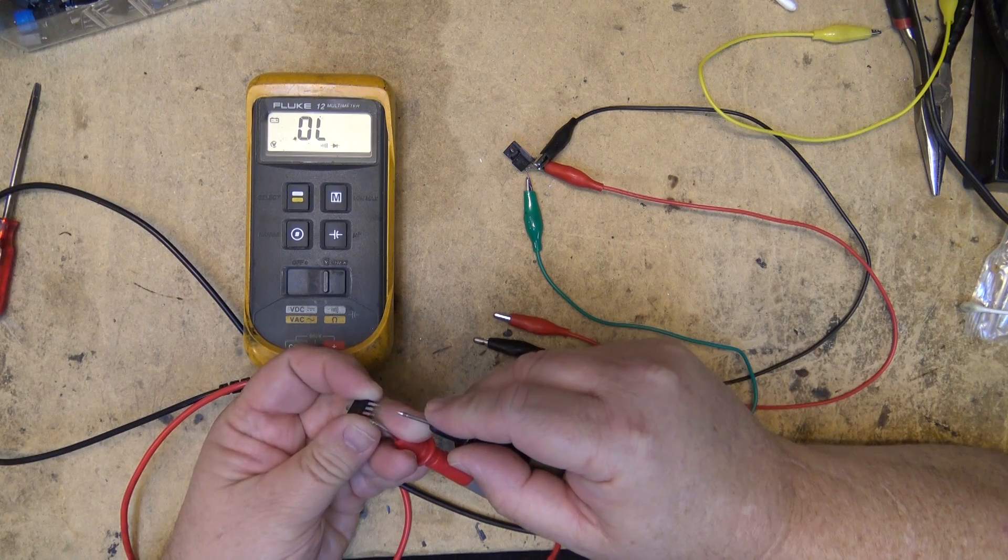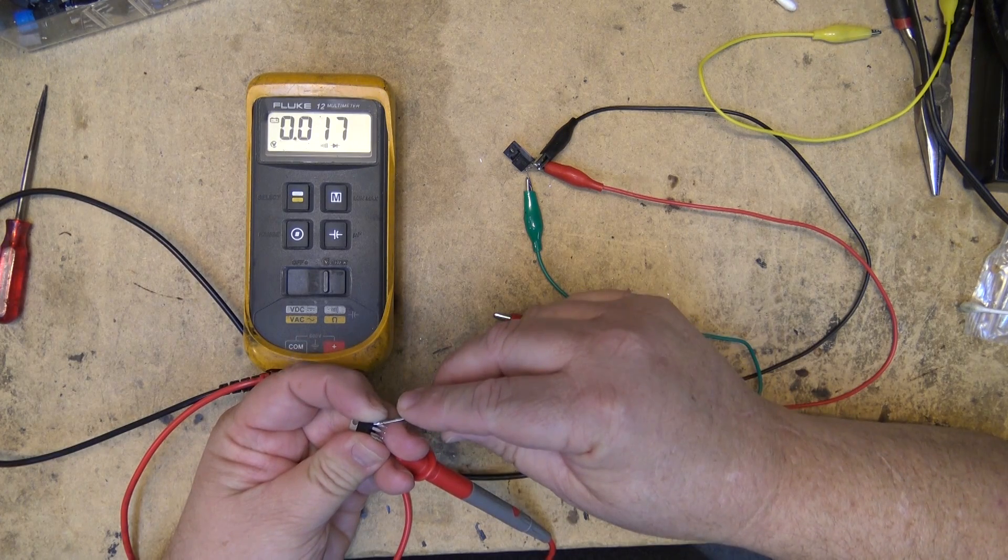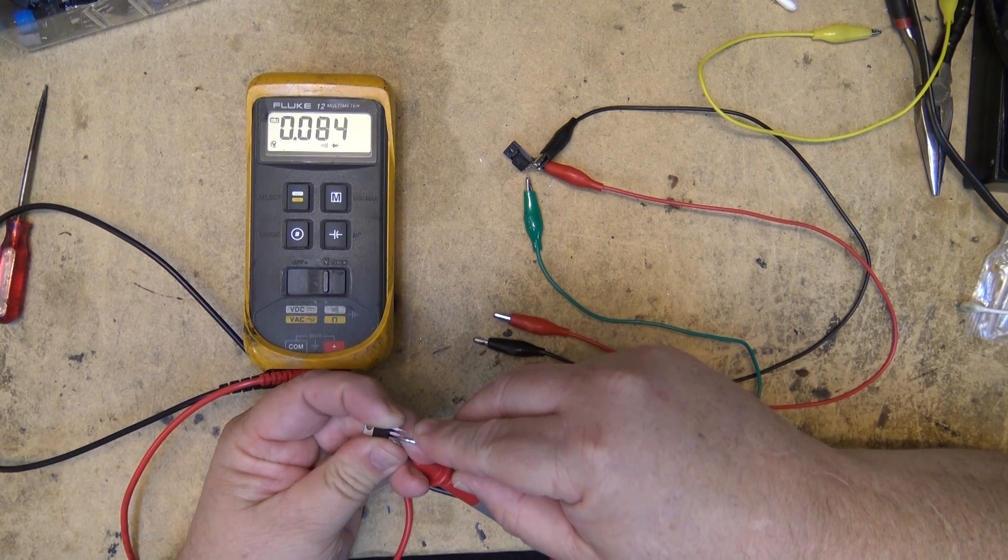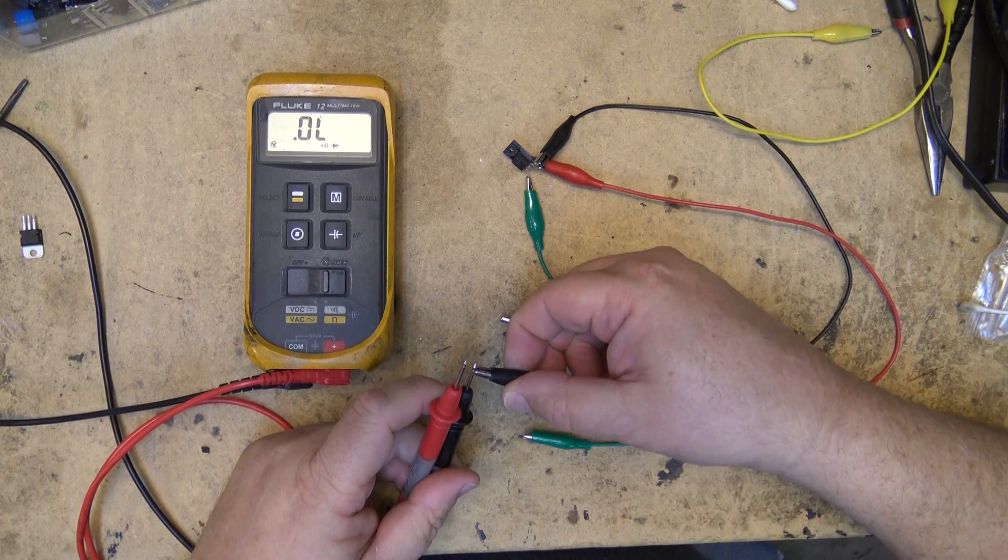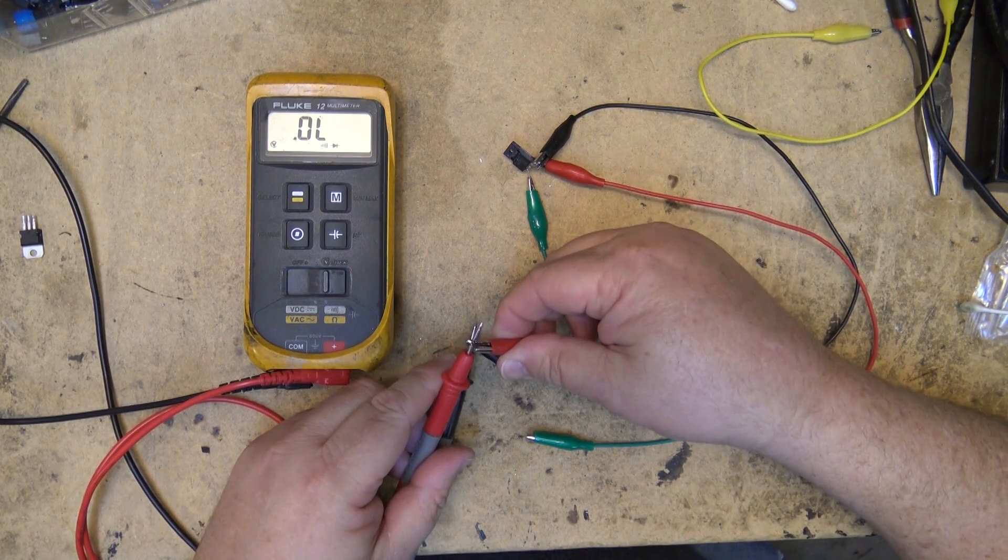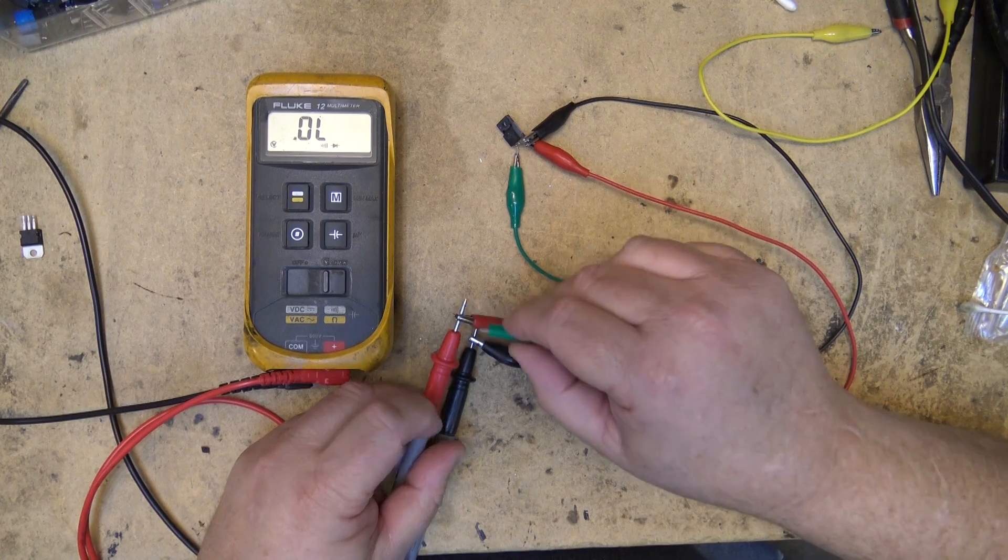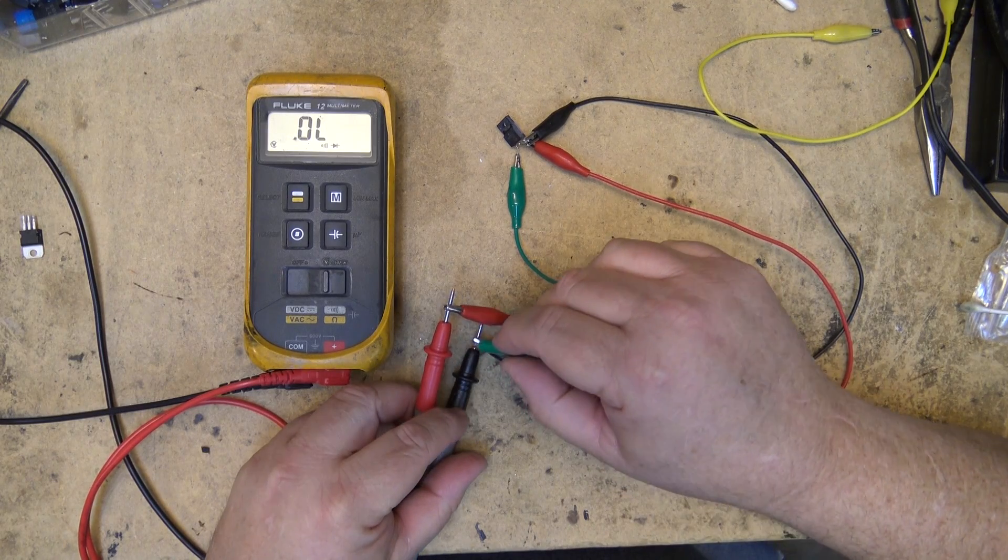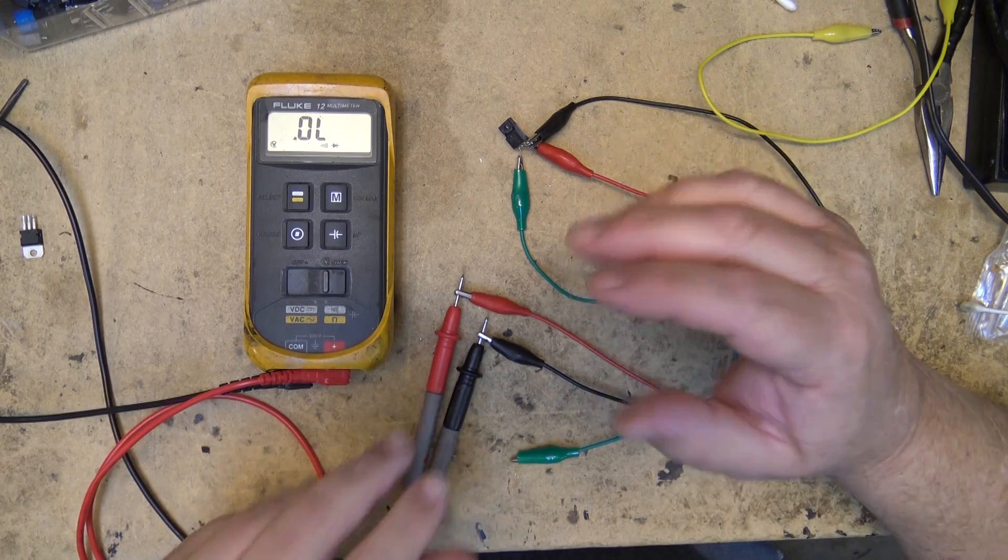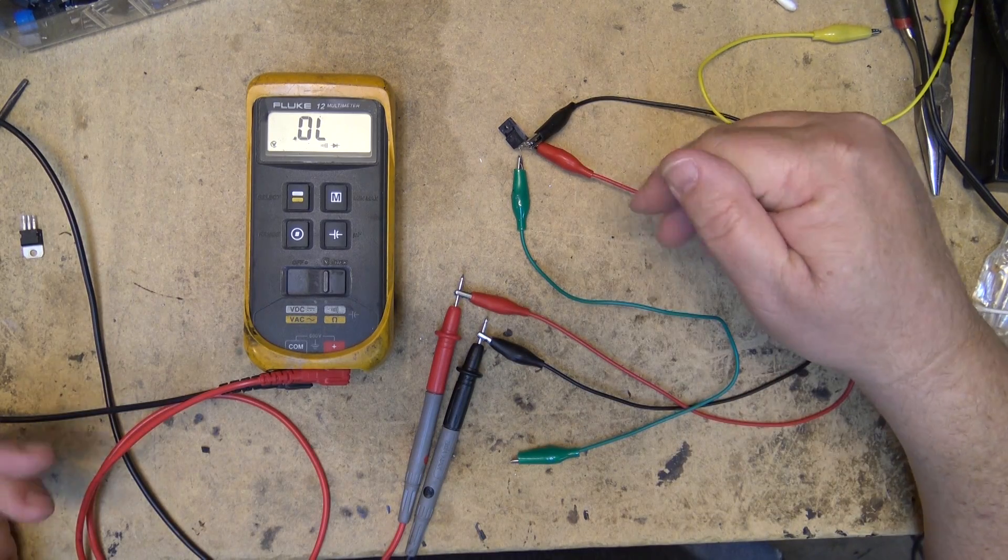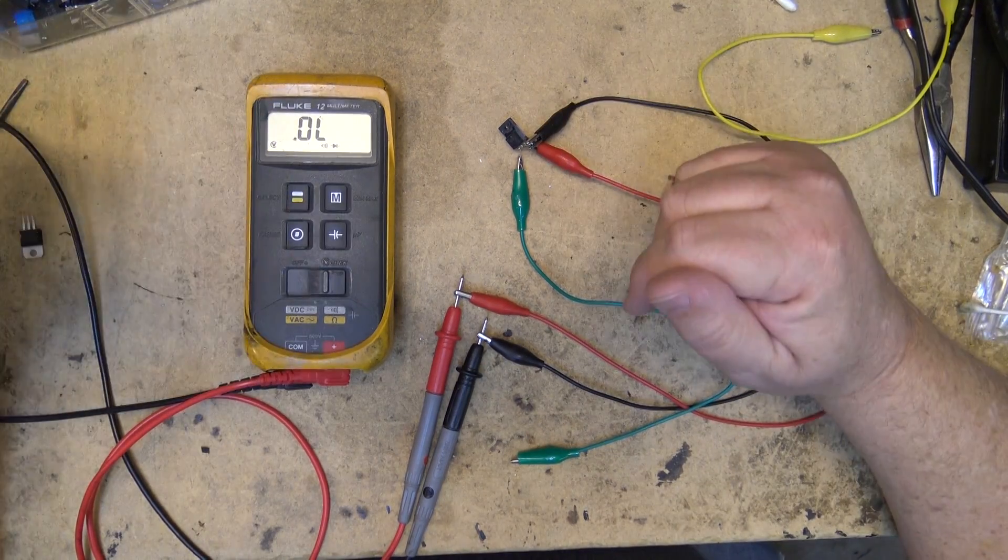When you're testing a MOSFET, if you get conduction like this, it's short. What you want a MOSFET to do when it's working is to switch on and switch off, switch on, switch off. That's the simplest way I think I can teach you how to test a MOSFET transistor.